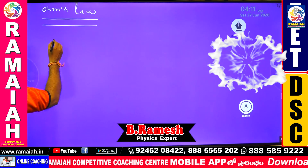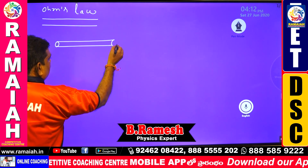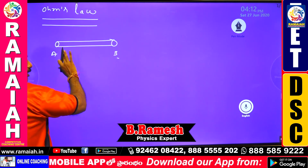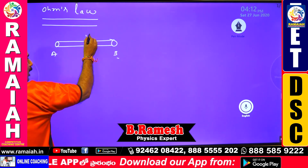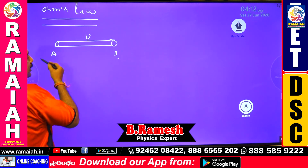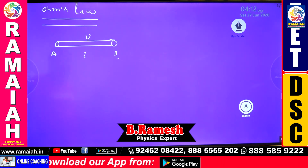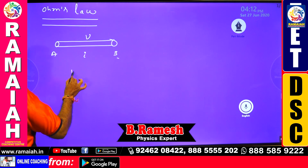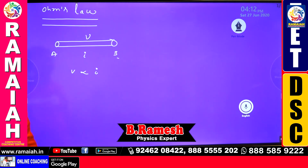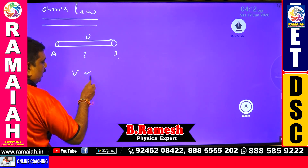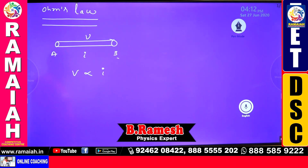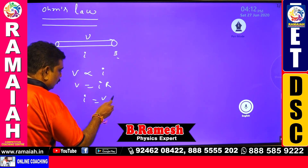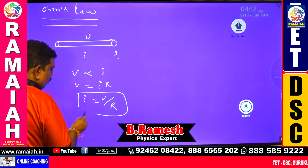What is Ohm's Law? Suppose this is one conductor with terminal A and terminal B. The potential difference between these two terminals is V, and the current flowing through this conductor is I. According to Ohm's Law, the potential difference is directly proportional to current at constant temperature: V proportional to I, V equals I times R, and I equals V over R. This is Ohm's Law.